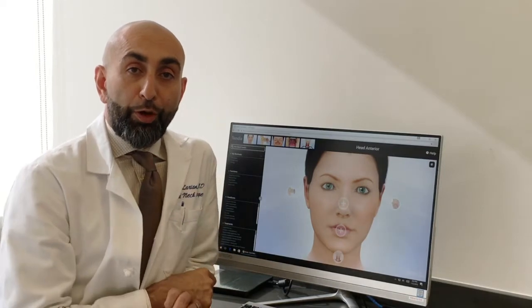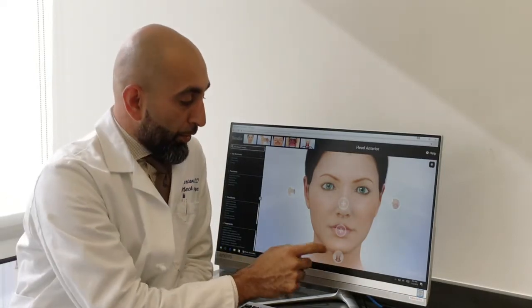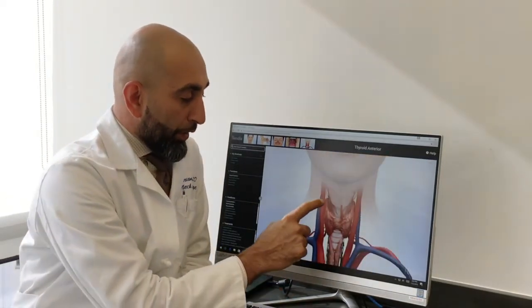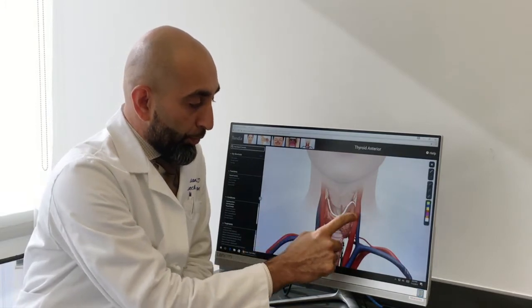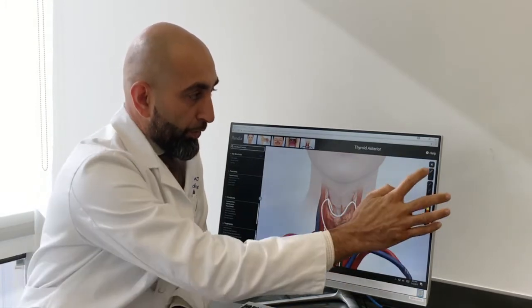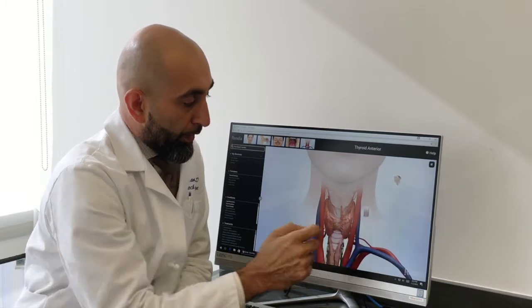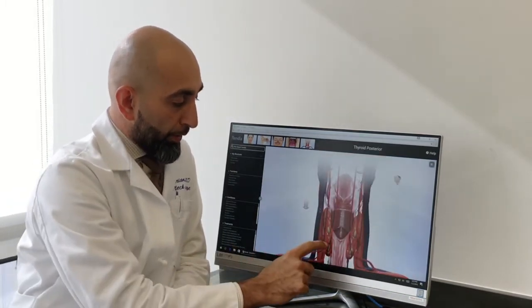The parathyroid glands perform a very important function. They are hiding behind the thyroid gland, which is in the lower neck. When you turn the thyroid gland around, you'll see the four parathyroids right behind it.